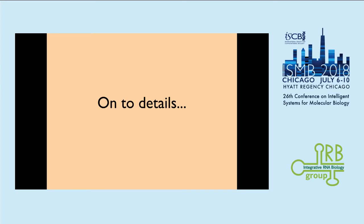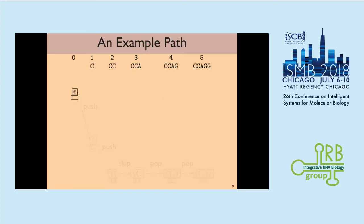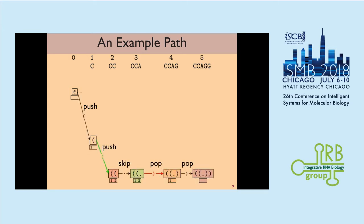Now I'll go into the details of our algorithm. I need to introduce two simple concepts: action and stack. I define three different actions. For an incoming nucleotide, you can push it by marking a left bracket and pushing the nucleotide onto the stack. In the future, if you want to pair this with somebody else, you pop it out. So we have an action-based transition system that uses a stack to support our prediction.